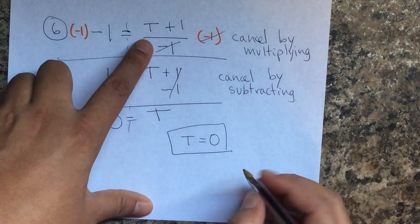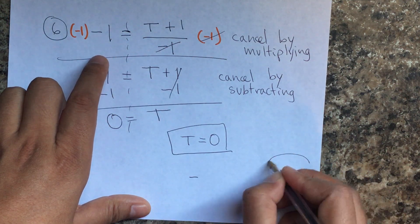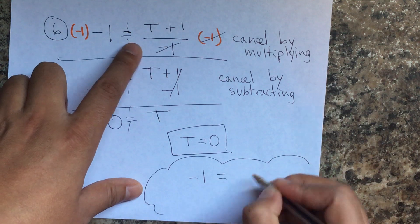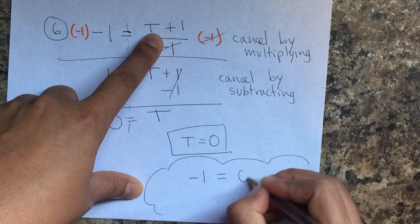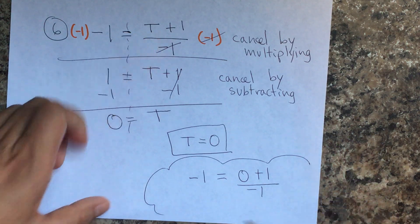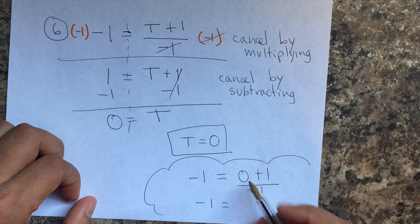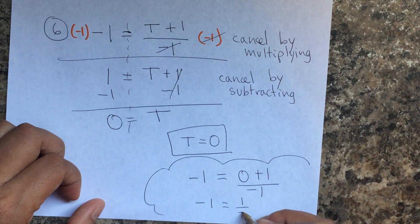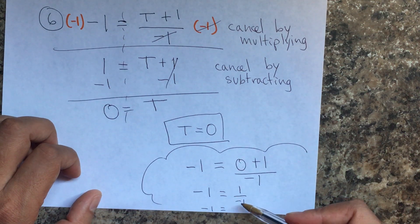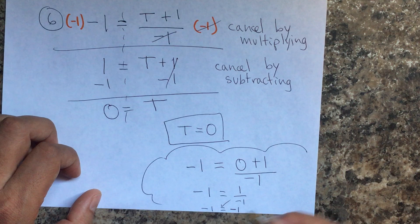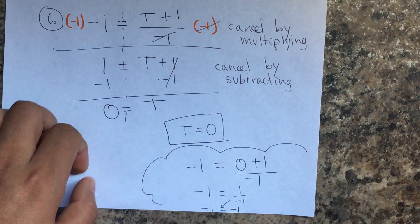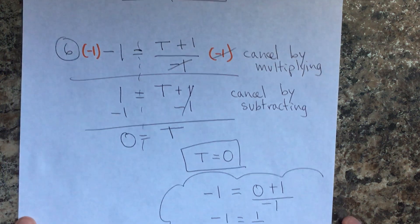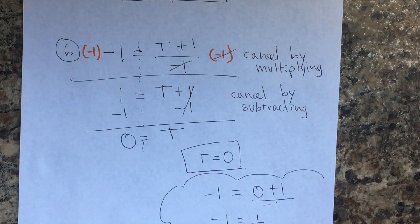Let's do the checkup test one last time. Negative one equals t, but the value of t is zero. Zero plus one divided by negative one: zero plus one is one, divided by negative one is negative one. So negative one equals negative one — check. If they are equal on both sides, the answer is correct. Now you can work on 11.13 — have fun!